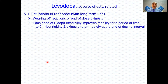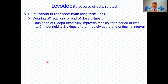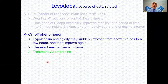Another adverse effect-related phenomenon is fluctuation in response. The 'wearing off' reaction occurs at the end of the dose interval, when there are periods of rigidity and akinesia as the effect of levodopa wears off — this takes about one to two hours. The 'on-off phenomenon' involves sudden episodes of hypokinesia and rigidity that can happen at any time, lasting minutes to hours; the mechanism is unknown, and treatment involves apomorphine.